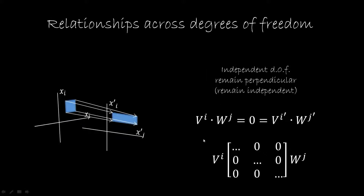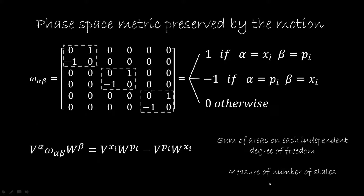Across degrees of freedom, the image can change the area but the direction must remain orthogonal, meaning the independent degrees of freedom remain independent. If this is true, the scalar product between the components of vectors along different degrees of freedom must be zero and must remain zero during our deterministic and reversible process. This condition is given by a matrix. Combining this matrix with the previous one — the cross terms are all zero, representing the relationship between different degrees of freedom, while within the same degree of freedom we have the vector product — we recognize this combined matrix as the omega_αβ that we defined before.